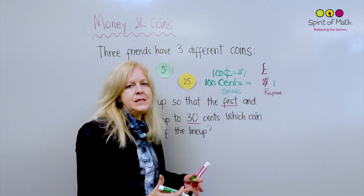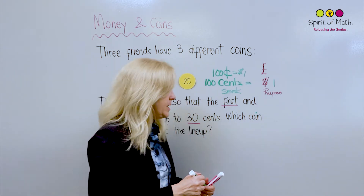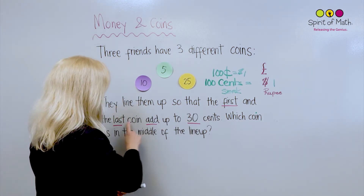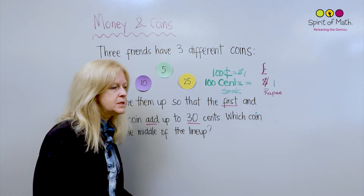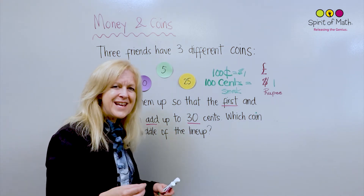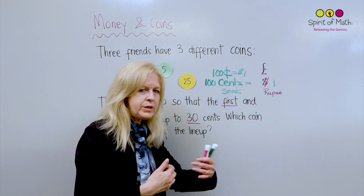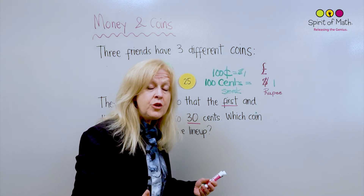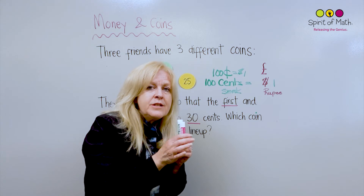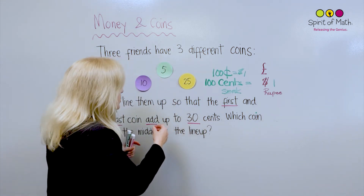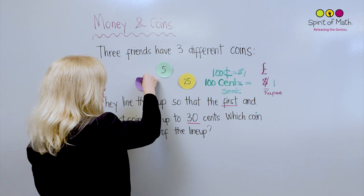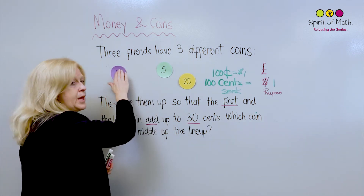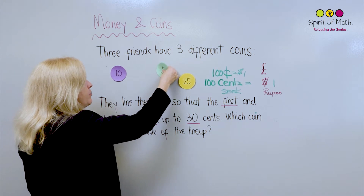When it says they add up to 30 cents, you have to put them together to see if they equal 30 cents — the difference would mean subtract, but 'add up' means you add. So let's try this: let's start with our ten cent coin first and put it over there. If we had a ten cent coin and we put a five with it...